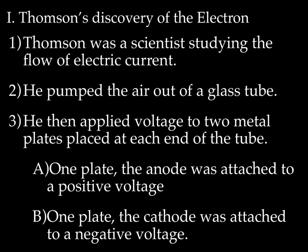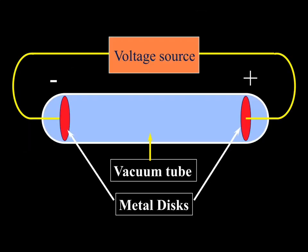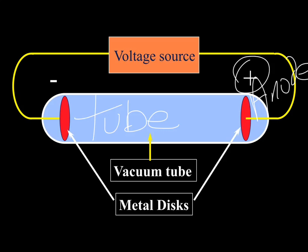There were two metal plates inside this tube, and he applied voltage to these plates. Basically, he connected the plates to a wire and the wire to a battery. The anode was connected to the positive voltage of the battery, and the cathode was connected to the negative voltage of the battery. Here we have our empty tube, our empty glass tube.